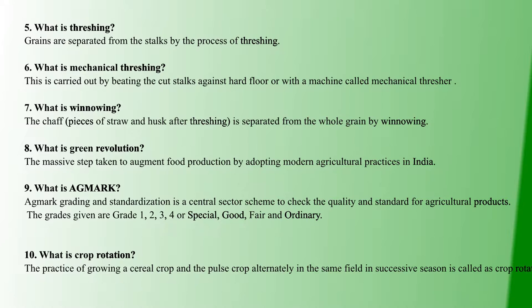Next question: what is crop rotation? Crop rotation is when, in a season, one crop is grown and then in the next season a pulse crop is planted. After harvest, a different crop is rotated in the same field — this is crop rotation.